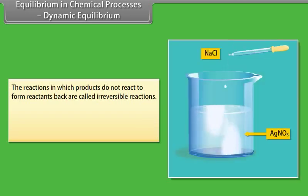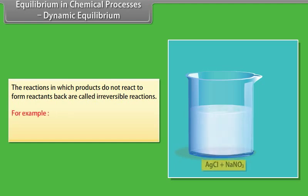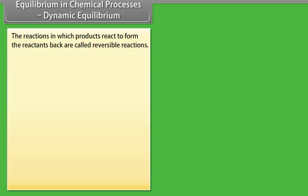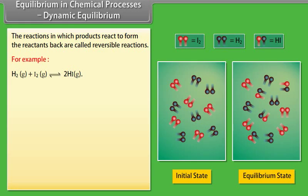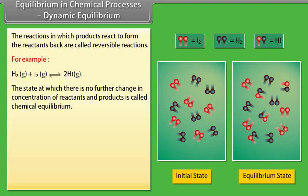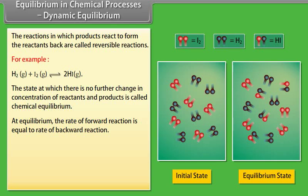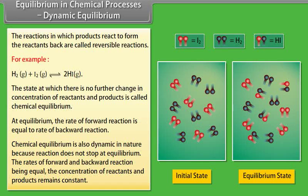Equilibrium in Chemical Processes — Dynamic Equilibrium: Reactions in which products do not react to form reactants back are called irreversible reactions (e.g., silver nitrate reacts with sodium chloride to give silver chloride and sodium nitrate). Reactions in which products react to form reactants back are called reversible reactions, represented by two arrows in opposite directions (e.g., hydrogen reacts with iodine to give hydrogen iodide). The state at which there is no further change in concentration of reactants and products is called chemical equilibrium, where the rate of forward reaction equals the rate of backward reaction.